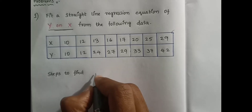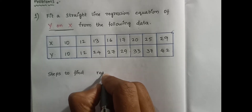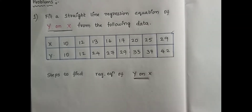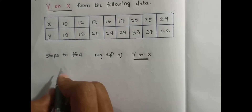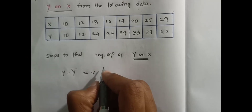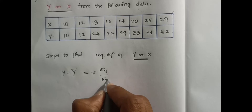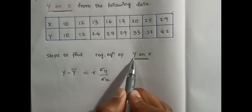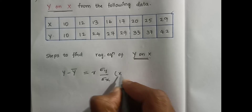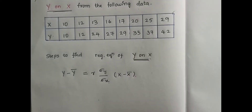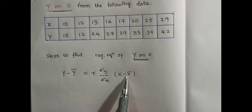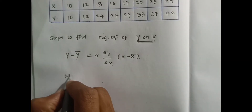Steps to find the regression equation y on x. Initially we have to formulate the equation y on x. The formula of regression equation of y on x is: y minus y-bar equals r of sigma-y upon sigma-x, into x minus x-bar. Regression analysis is a statistical device with the help of which we are in a position to estimate or predict the unknown values of one variable from known values of another variable.